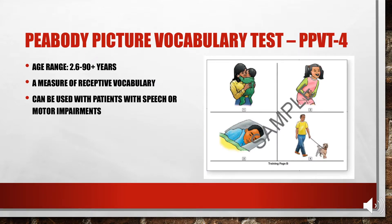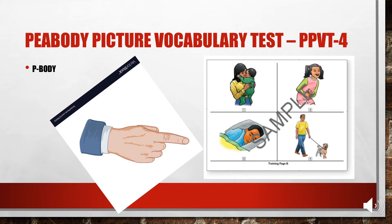The Peabody Picture Vocabulary Test, PPVT-4, is used basically across the lifespan from ages 2 years and 6 months up through 90-plus years. It's a measure of receptive vocabulary — the patient has to point to the picture that corresponds with the vocabulary word. It can be used with patients with speech and motor impairments because all they have to do is point. You can remember this by thinking 'P-Body' — all they have to do is point with their body.